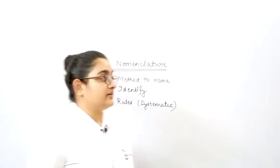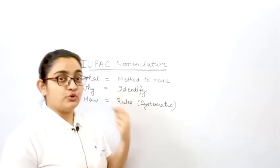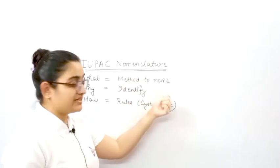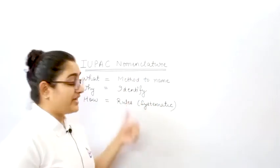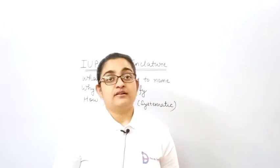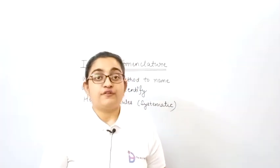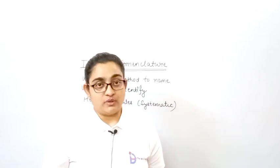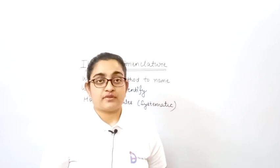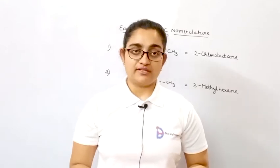So, basically for IUPAC nomenclature, we should know what IUPAC nomenclature is all about, why we are studying it, and how we actually study the IUPAC nomenclature for knowing the names of organic compounds in chemistry — in organic chemistry especially. Now let's look at some examples through which we can understand the concept of IUPAC nomenclature.